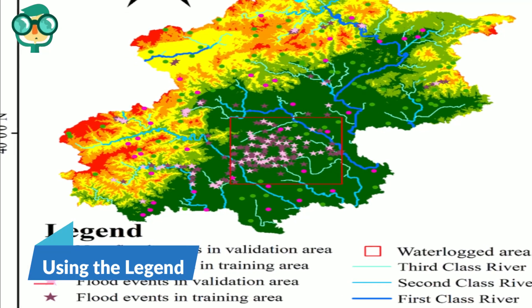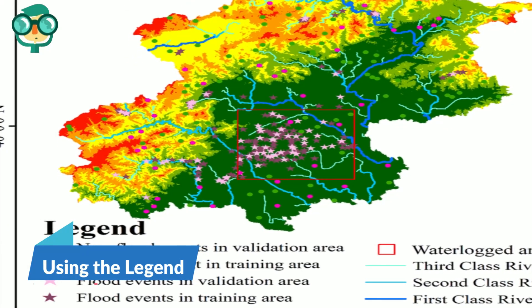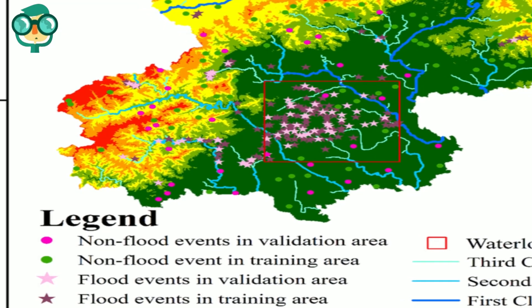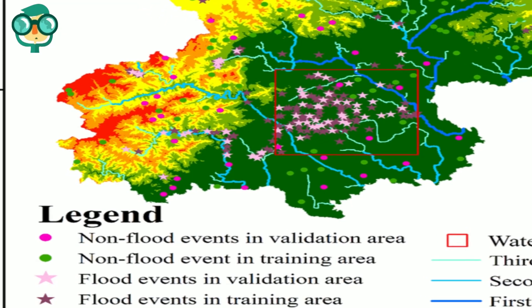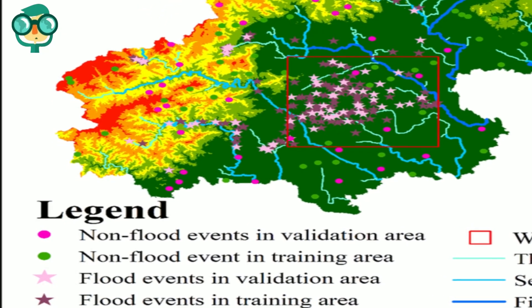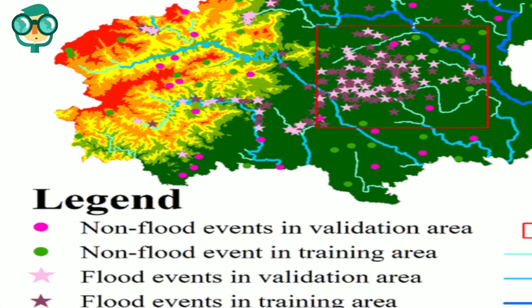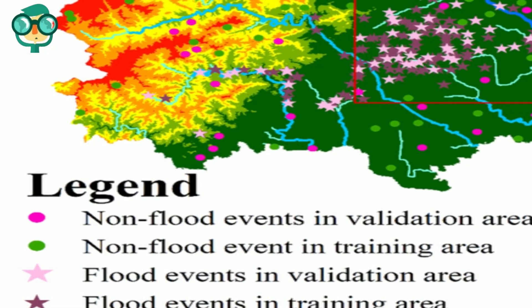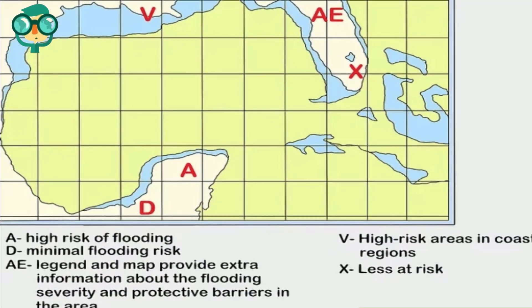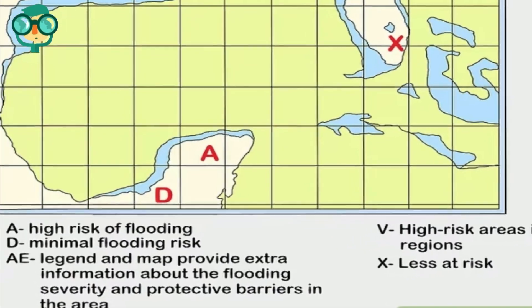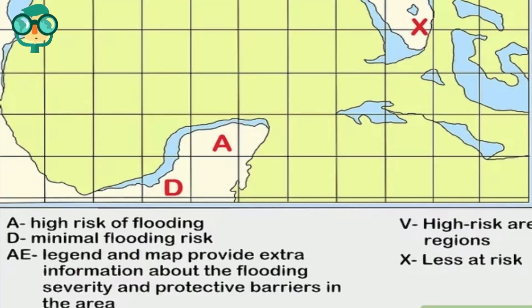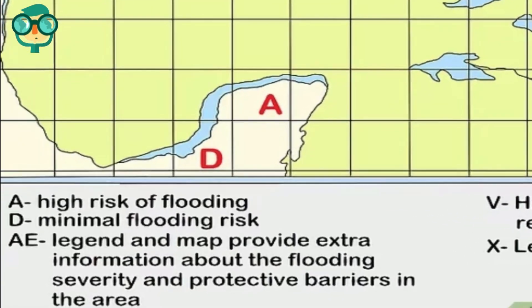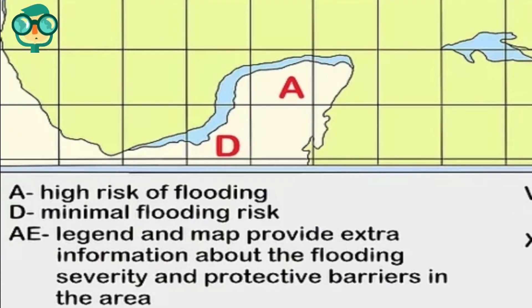The third step is using the legend. View the legend to understand what map symbols mean. Every symbol that appears on the map will be listed in the legend, along with an explanation of what the symbol means. Use the zone designation letters to gauge the flooding risk. The legend explains the letter combinations representing zones on the map.